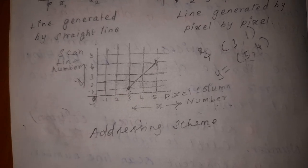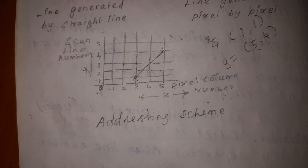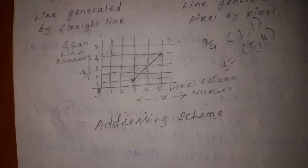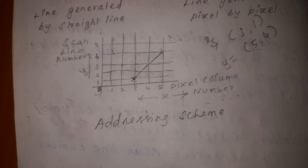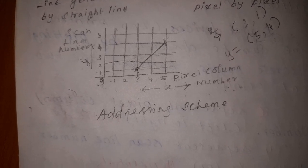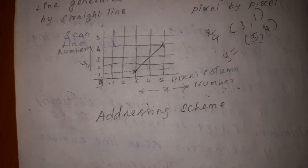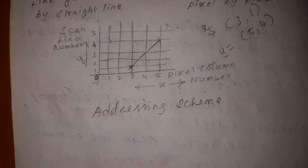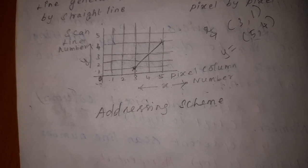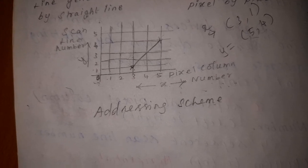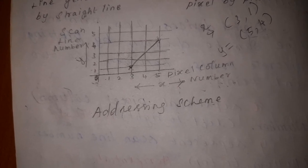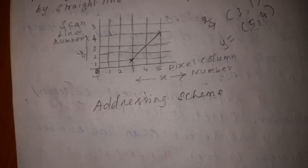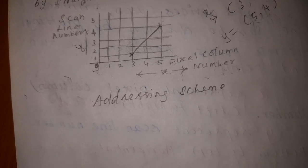To summarize, we have learned about what a primitive is and what an output primitive is. In this output primitive section, we discussed points and lines. Thank you.